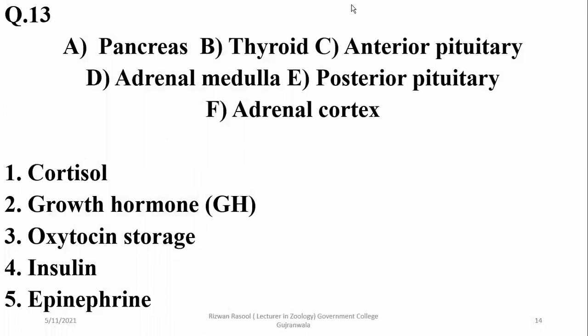Here are some glands to match with their hormones. Cortisol is released from the adrenal cortex, so F is the right option. Growth hormone is released by the anterior pituitary, and oxytocin is stored in the posterior lobe. Insulin is produced by the beta cells of the pancreas, and epinephrine is from the adrenal medulla.